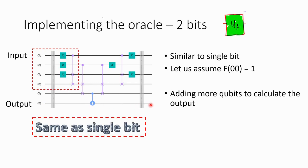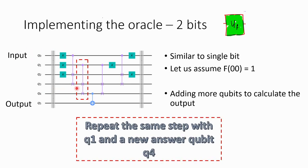If you look carefully, this part is exactly the same as a single bit. So q0 is CSWAPped or ANDed with q2 — the beginning of the answer bit — and then the result is stored in q3. This is exactly the same as what we have seen in the previous slide.